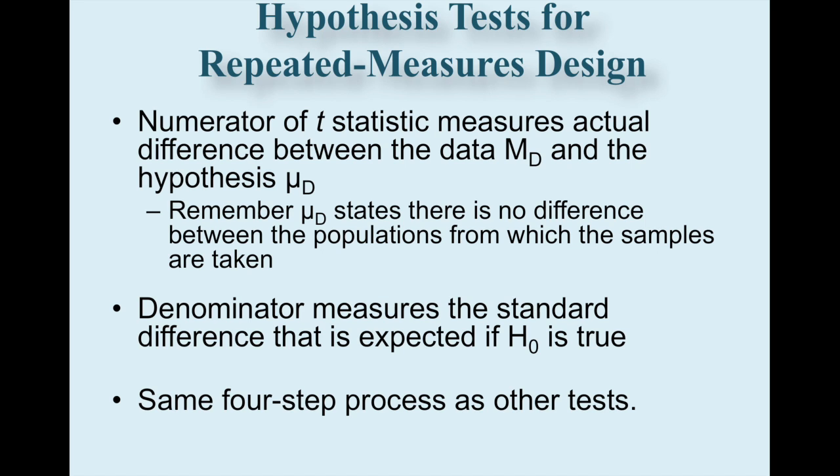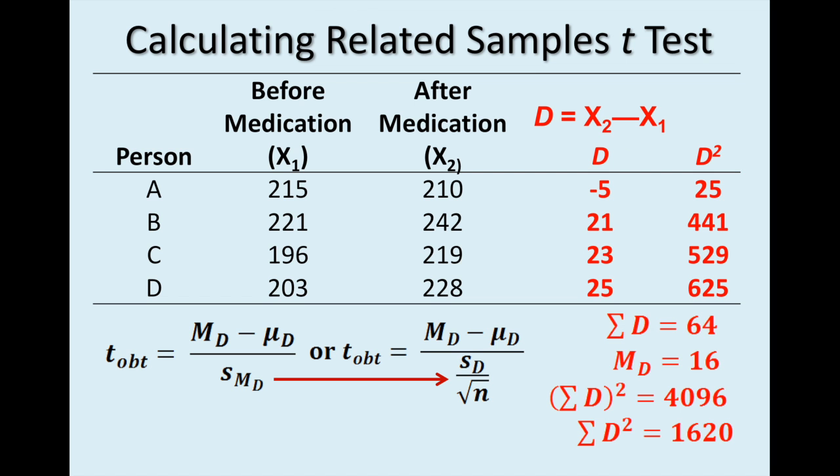So hypothesis tests for repeated measures design, the top part, the numerator, the t-statistic, again, measures that difference, that actual difference between the sample data, the sample average difference, and the population mu difference. And then the denominator, the bottom part, measures the standard difference that's expected if that null hypothesis is, in fact, true. And again, it still follows that same four-step process as other tests. So you're going to say your alpha and your critical regions, all that should feel exactly the same.